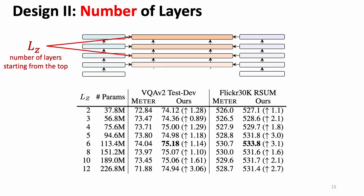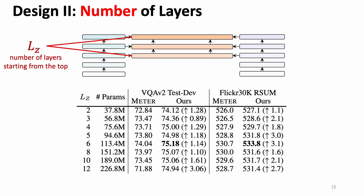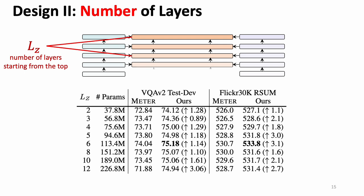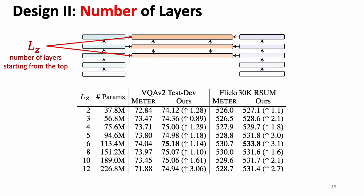To study the different numbers of layers, we use our base setting with 12-layer textual and visual encoders. We define L as the number of cross-modal layers starting from the top. Comparing METER and Bridge Tower on two datasets with different L, we find that more cross-modal layers do not constantly improve performance. However, while the only difference between METER and Bridge Tower is the bridge layers, Bridge Tower can achieve consistent performance gains for different numbers of cross-modal layers.